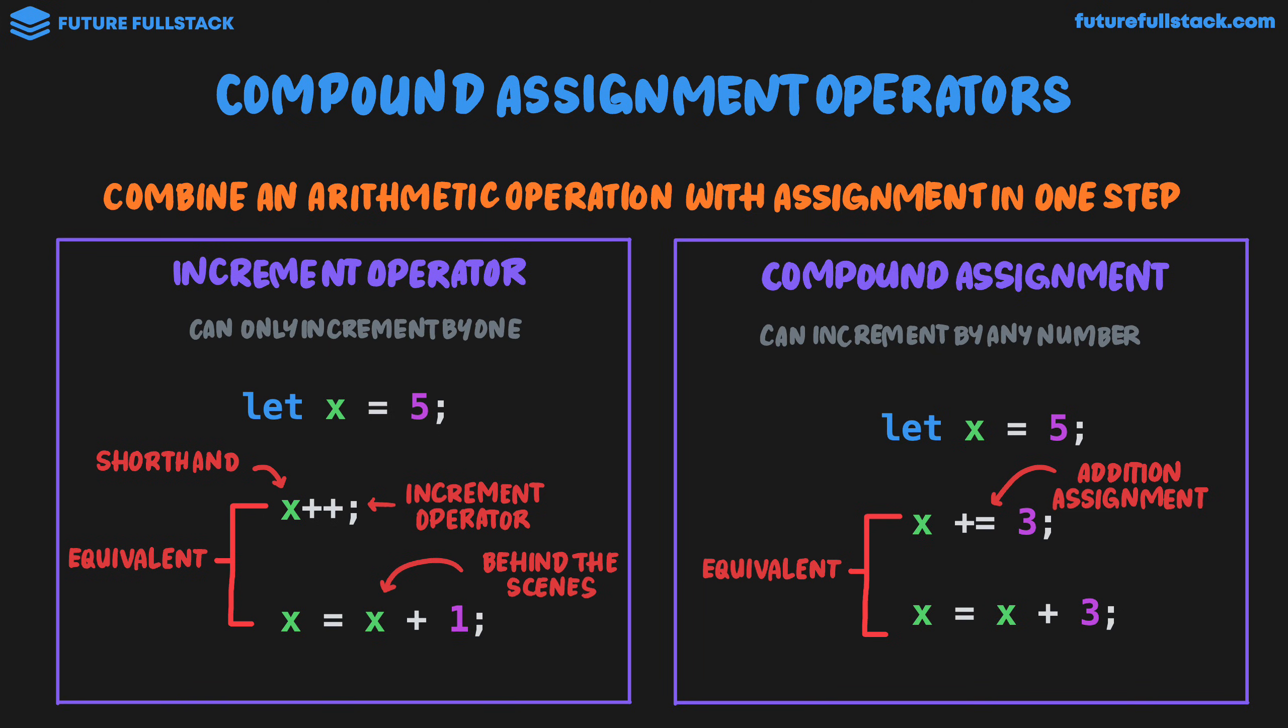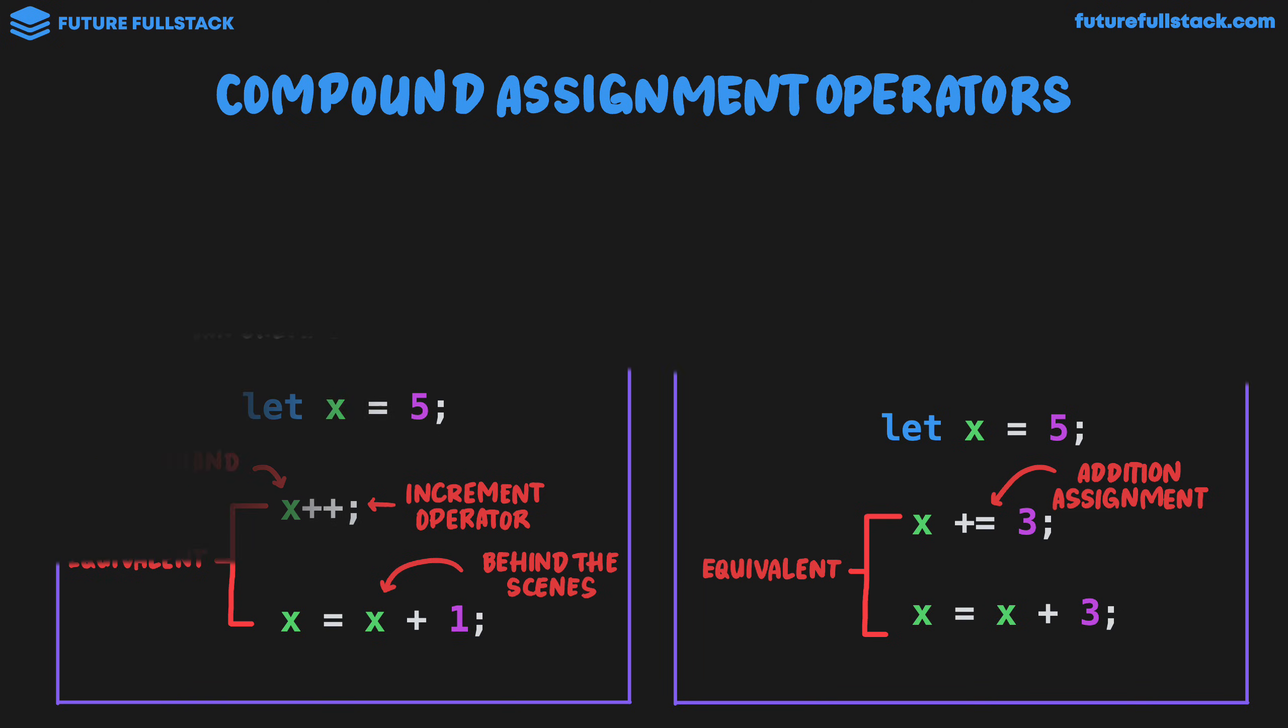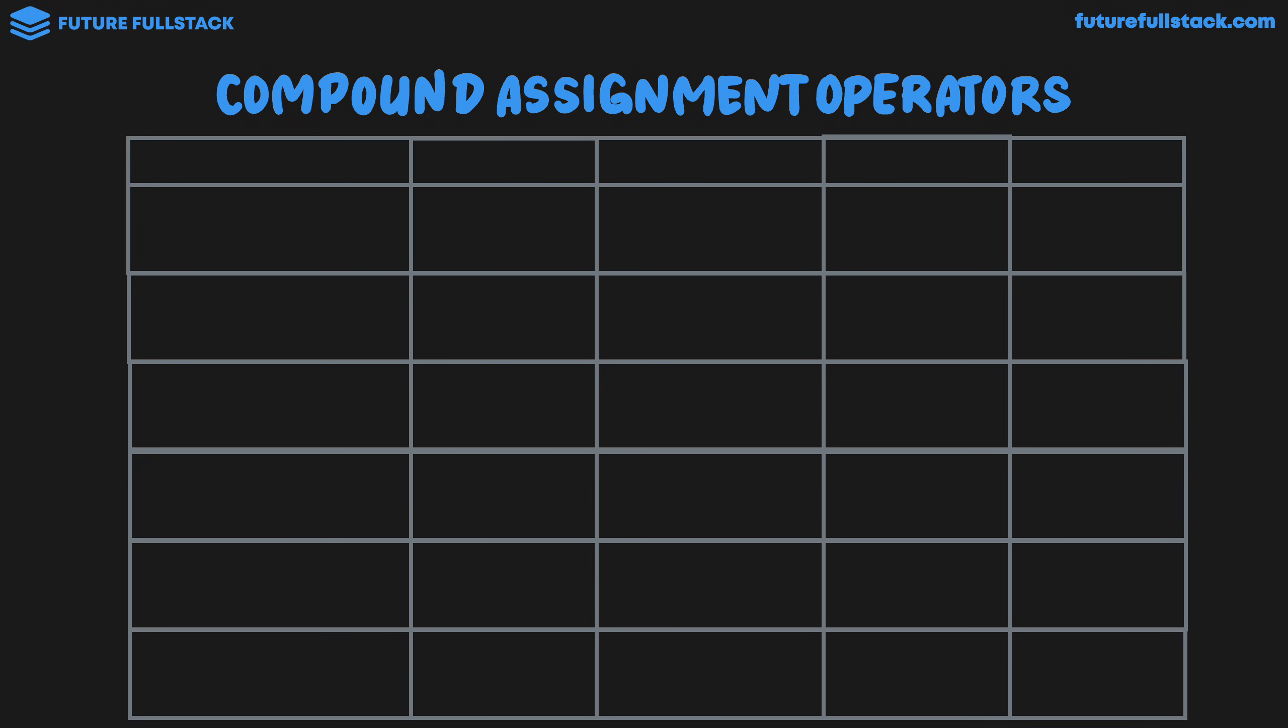So let's now take a look at all the different compound assignment operators inside this table. I'll be going through the name of each, the operator's symbol, an example, the results of the example, and its usage. Starting with the addition assignment operator, which we just looked at, we saw that the notation is plus equals. Looking at an example, let x equals 6. x plus equals 2 would now mean that the value of x is 8. And for its usage, it is commonly used.